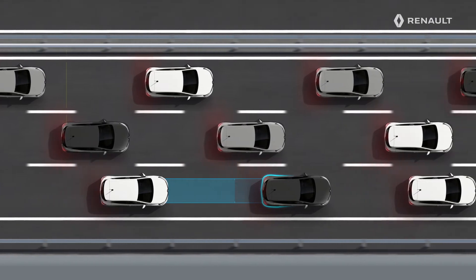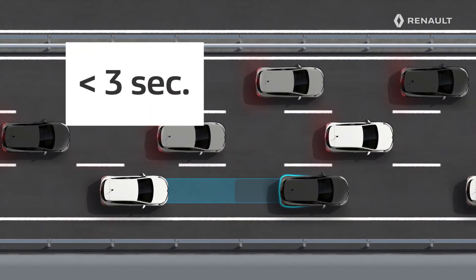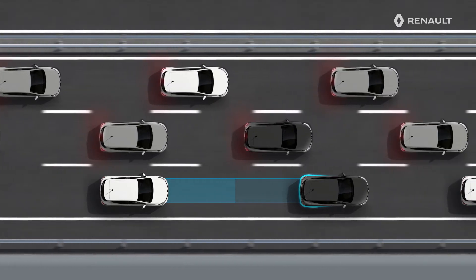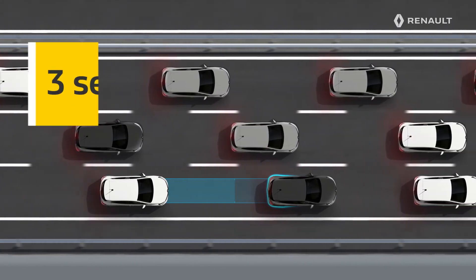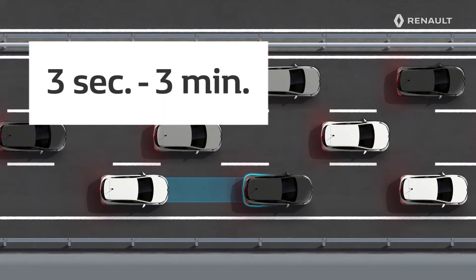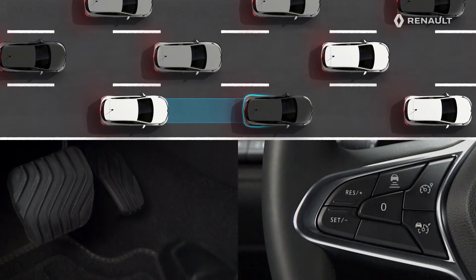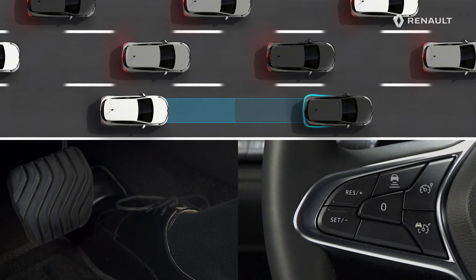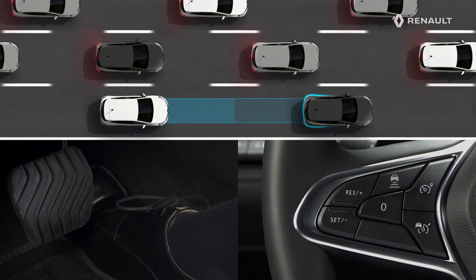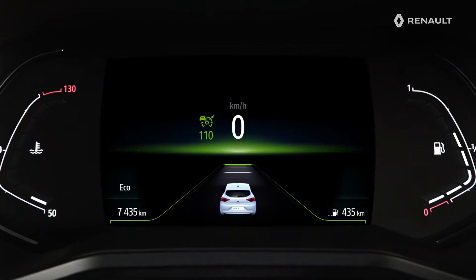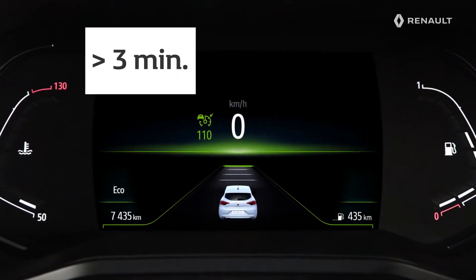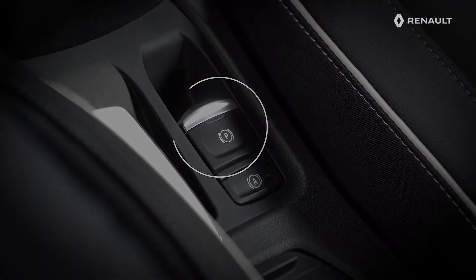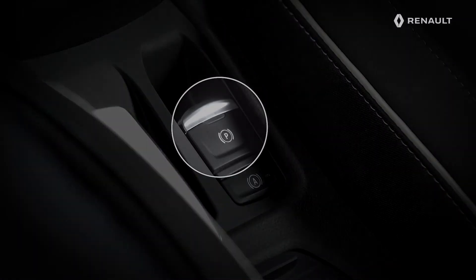If the vehicle in front of you restarts in under 3 seconds, your new Renault Clio restarts automatically. If the restart takes place between 3 seconds and 3 minutes, simply tap the accelerator or this button to reactivate the cruise control and its stop and go system. After 3 minutes, the adaptive cruise control will be deactivated and the electronic parking brake will be applied.